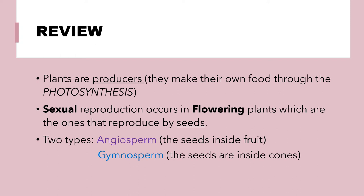First, a little bit of review. Plants are producers — they make their own food through photosynthesis. Sexual reproduction occurs in flowering plants, which are the ones that are reproduced by seeds.